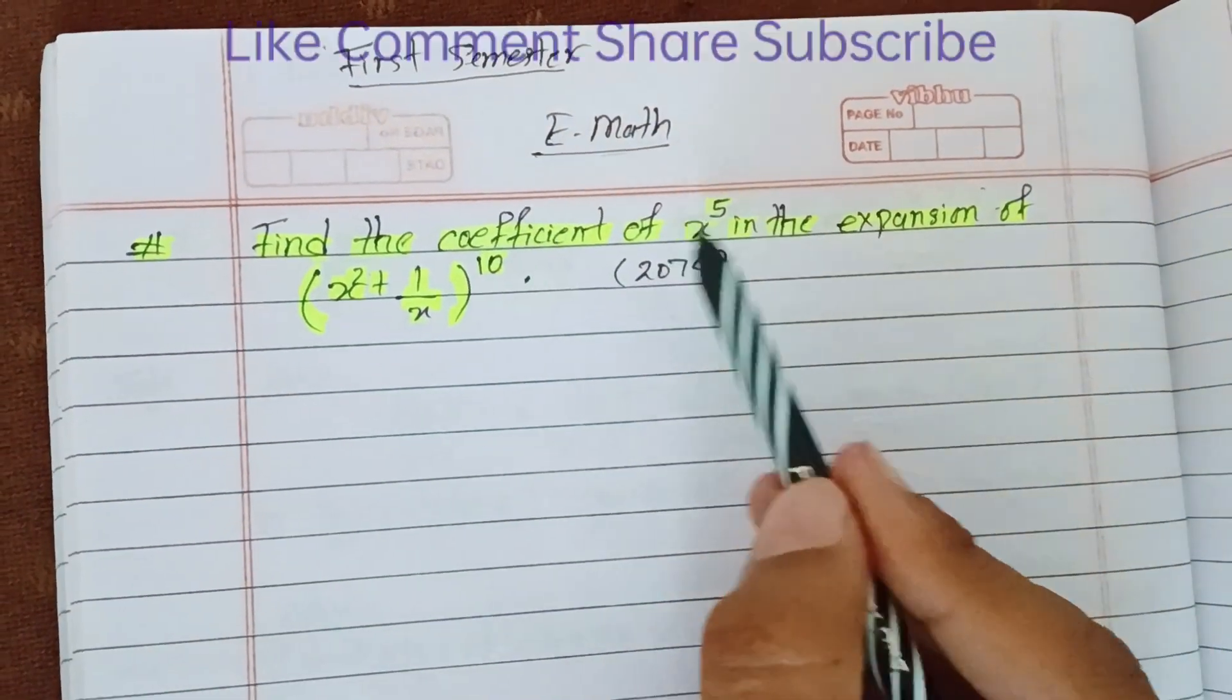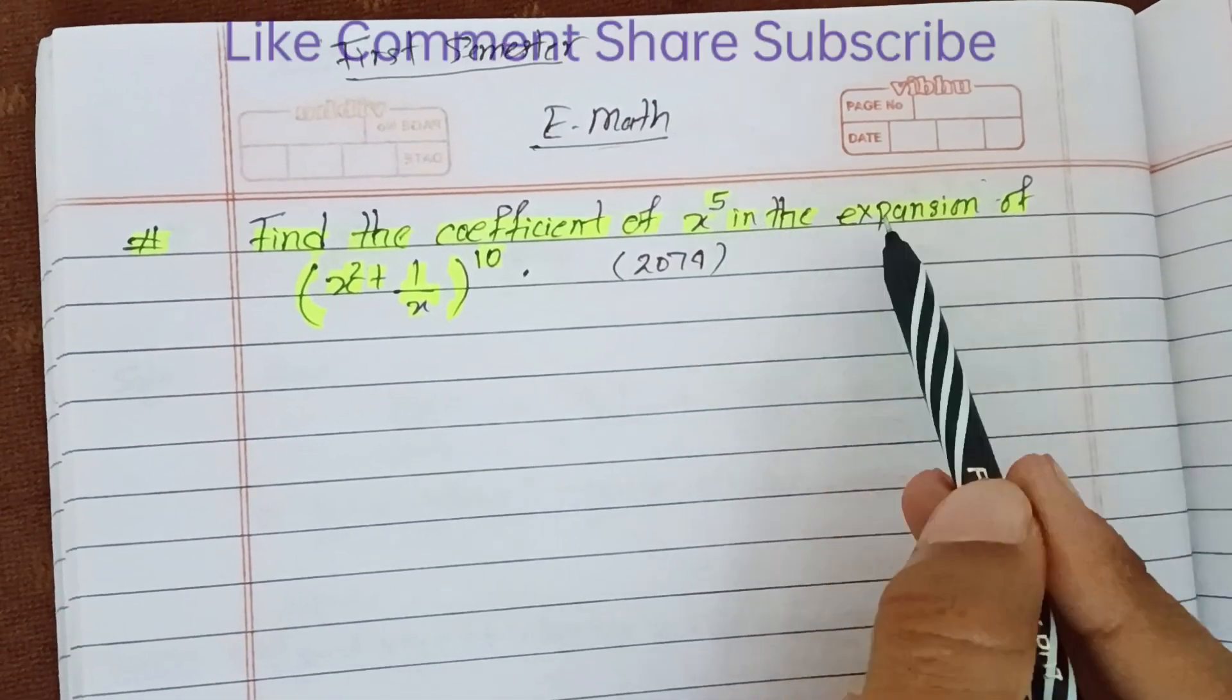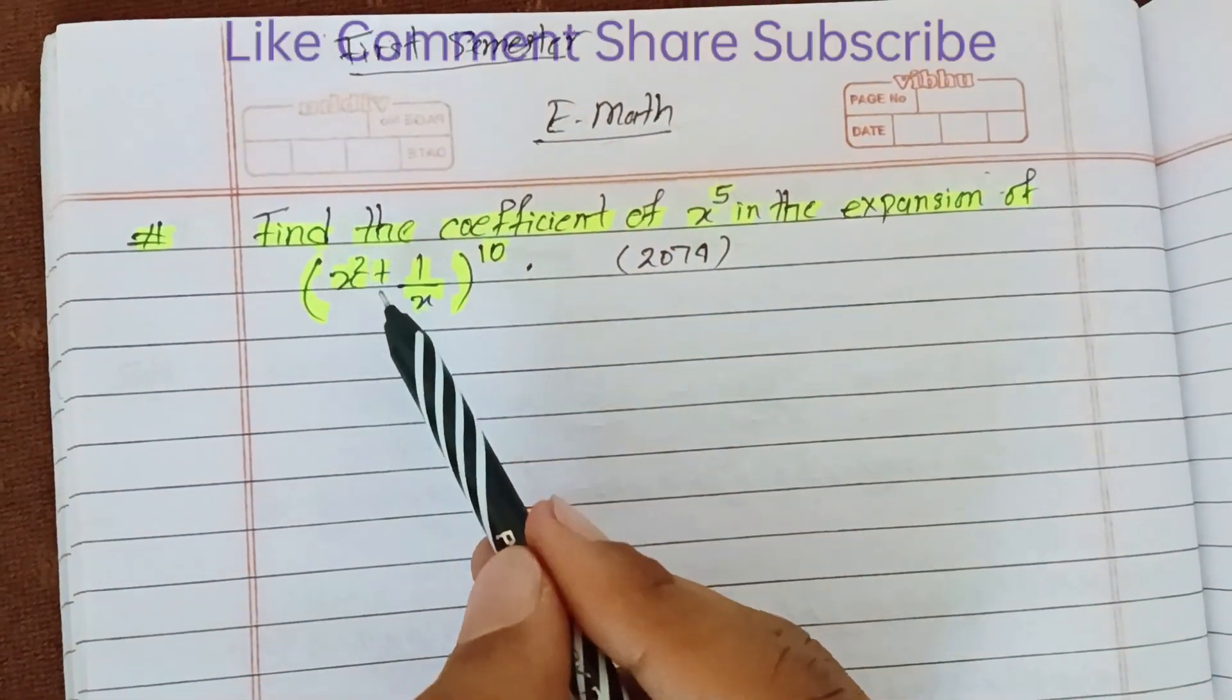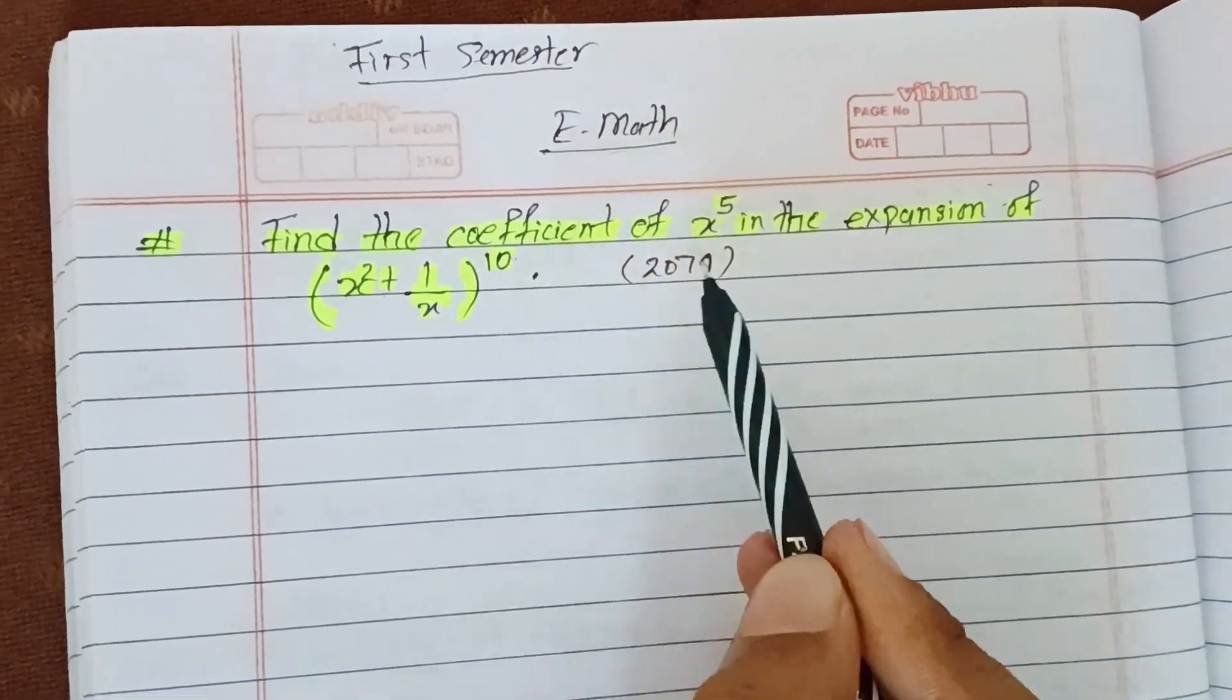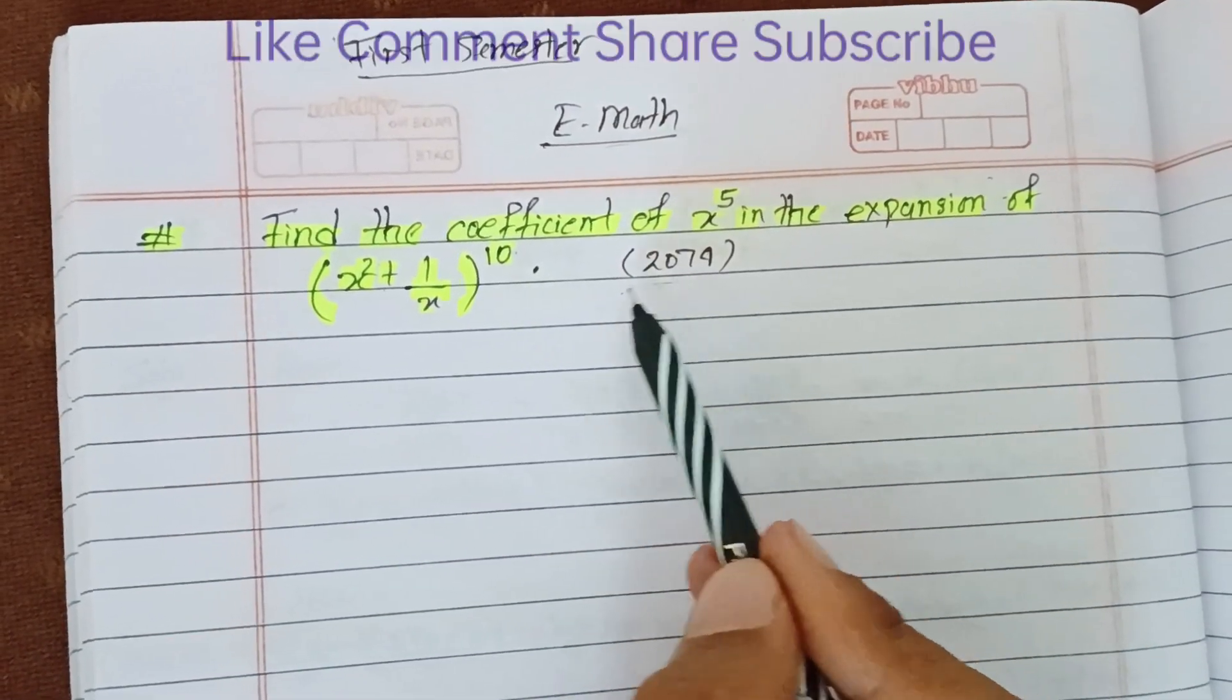Find the coefficient of x^5 in the expansion of (x^2 + 1/x)^10. This problem is from the 2074 exam.